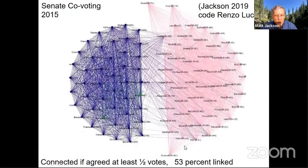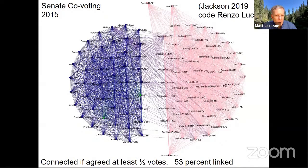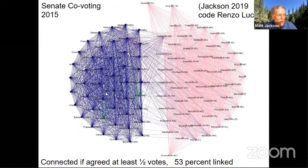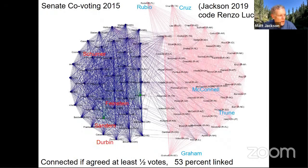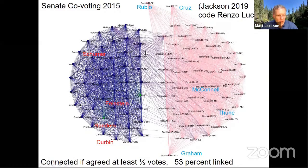Now let's go to 2015, just before the 2016 election. This thing just splits apart — you've got a heavily split network where only 53% of senators are voting the same way, and most of those are within party. McConnell is fairly central in the Republican party, Feinstein is over on the Democrat side. Lindsey Graham pulls out, Rubio and Cruz are a little extreme on the Republican side. What you end up with is a much more fractured network than we used to see.